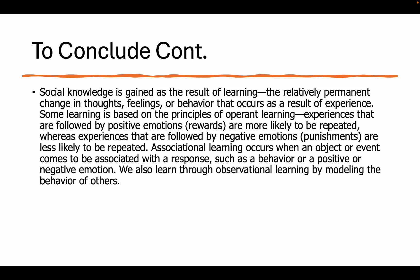Social knowledge is gained as the result of learning — the relatively permanent change of thoughts, feelings, or behavior that occurs as a result of experience. Some learning is based on the principles of operant conditioning, where experiences followed by rewards are more likely to be repeated and those followed by punishments are less likely. Associative learning and classical conditioning help us anticipate events, and we also learn through observational learning by modeling the behavior of others — things don't have to happen directly to us for us to learn. I want to thank you for tuning into this particular chapter; I hope to see you in the next one.